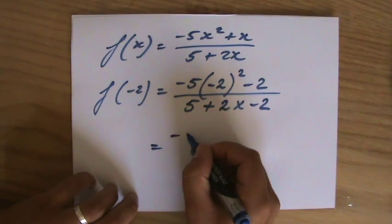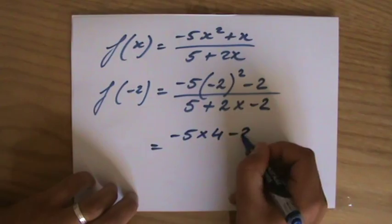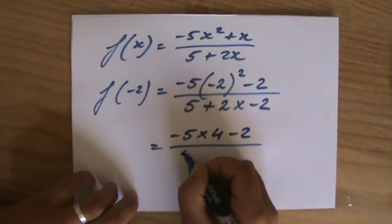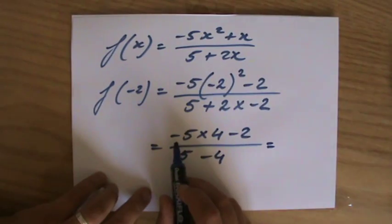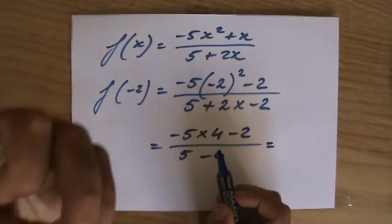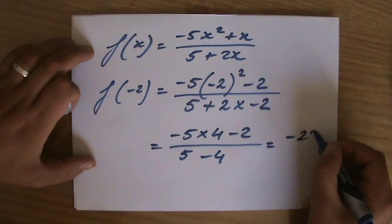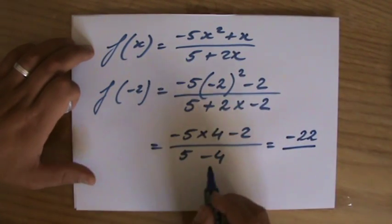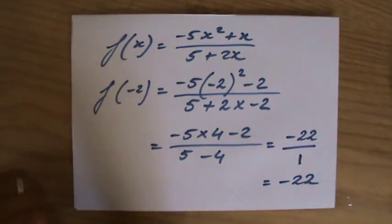Okay, let me quickly do that now. So that's minus 5 times 4 minus 2 over 5, and 2 times minus 2 is minus 4. Minus 5 times 4 is minus 20, minus 2 is minus 22 over 5 minus 4. That is 1, and that will equal to minus 22.